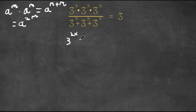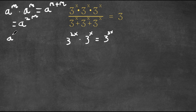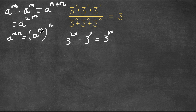Now if we multiply this by 3 to the power of x again, 2x plus x is 3x, so we have 3 to the power of 3x. And if we have something in the form a to the power of m times n, this can be written as a to the power of m to the power of n. So I'm going to write 3 to the power of 3x as 3 to the power of x to the power of 3.